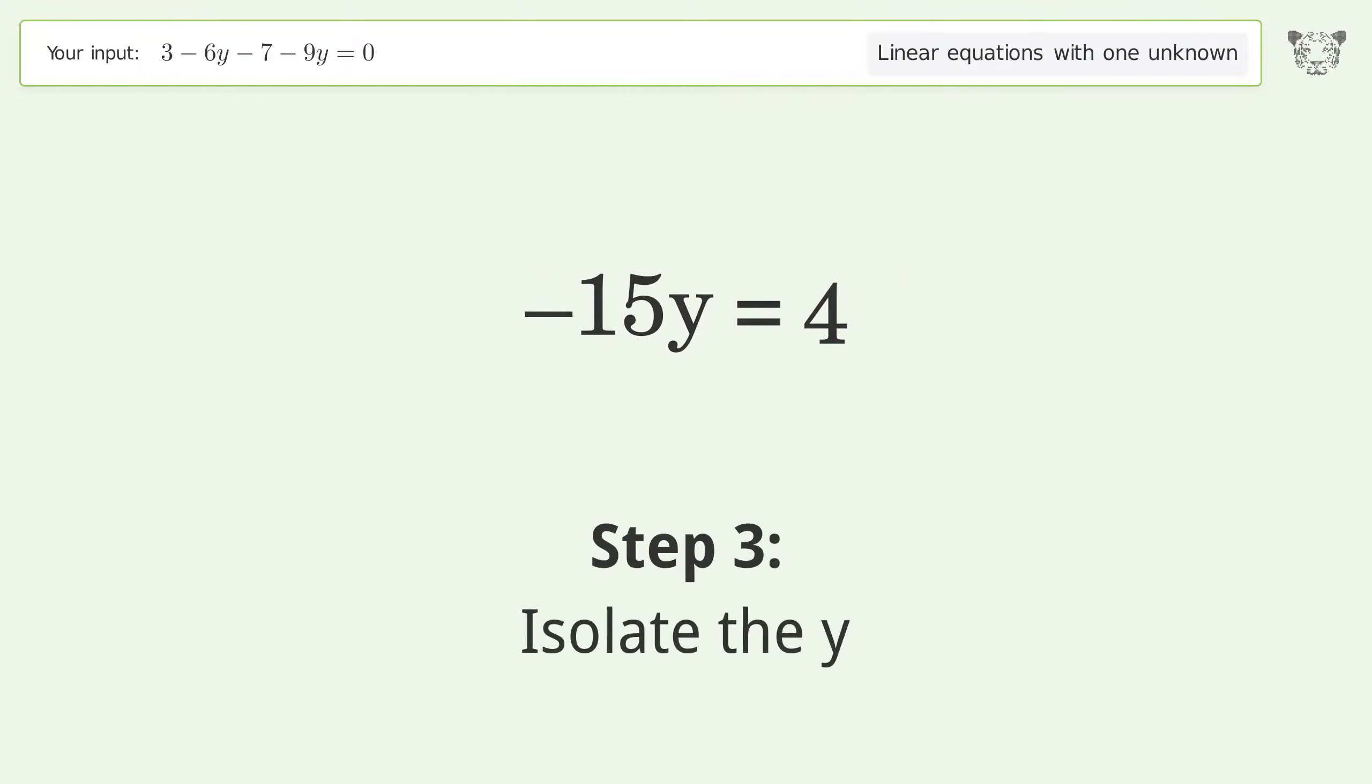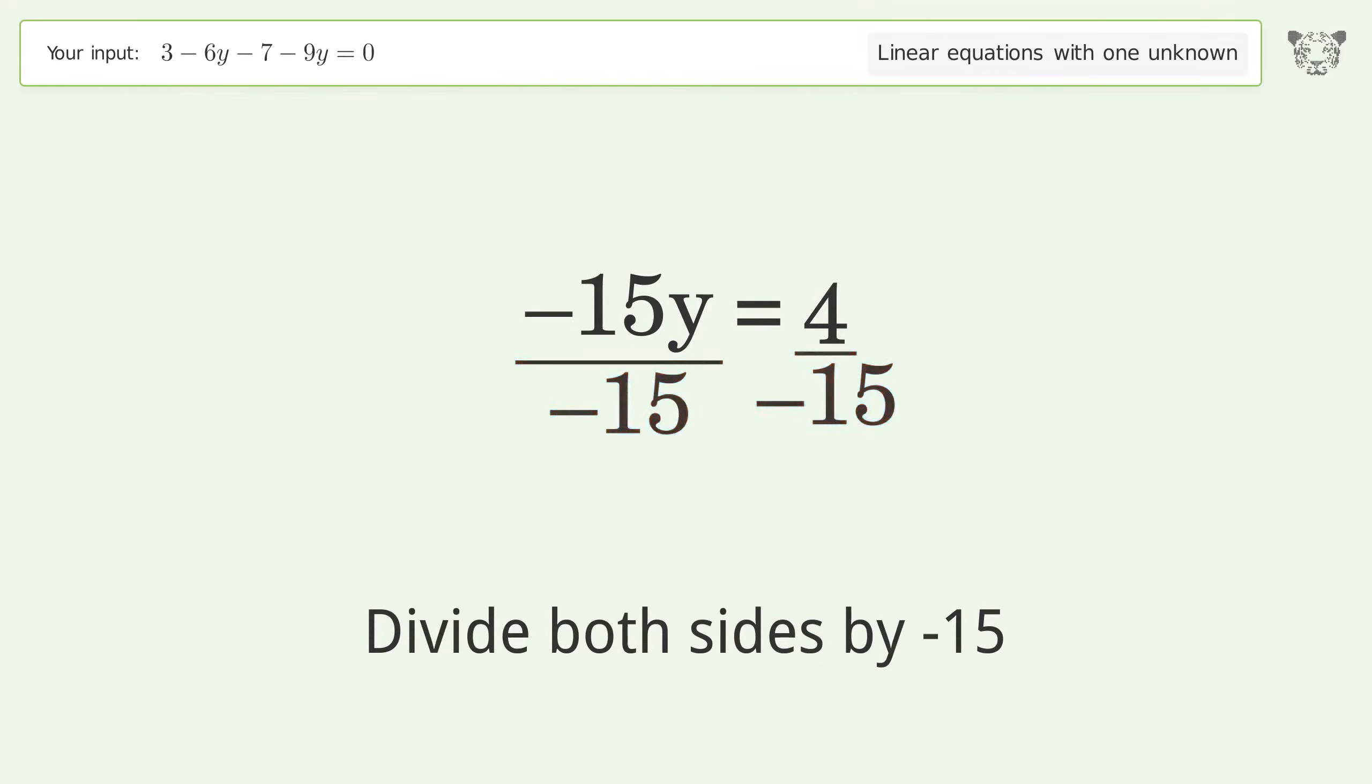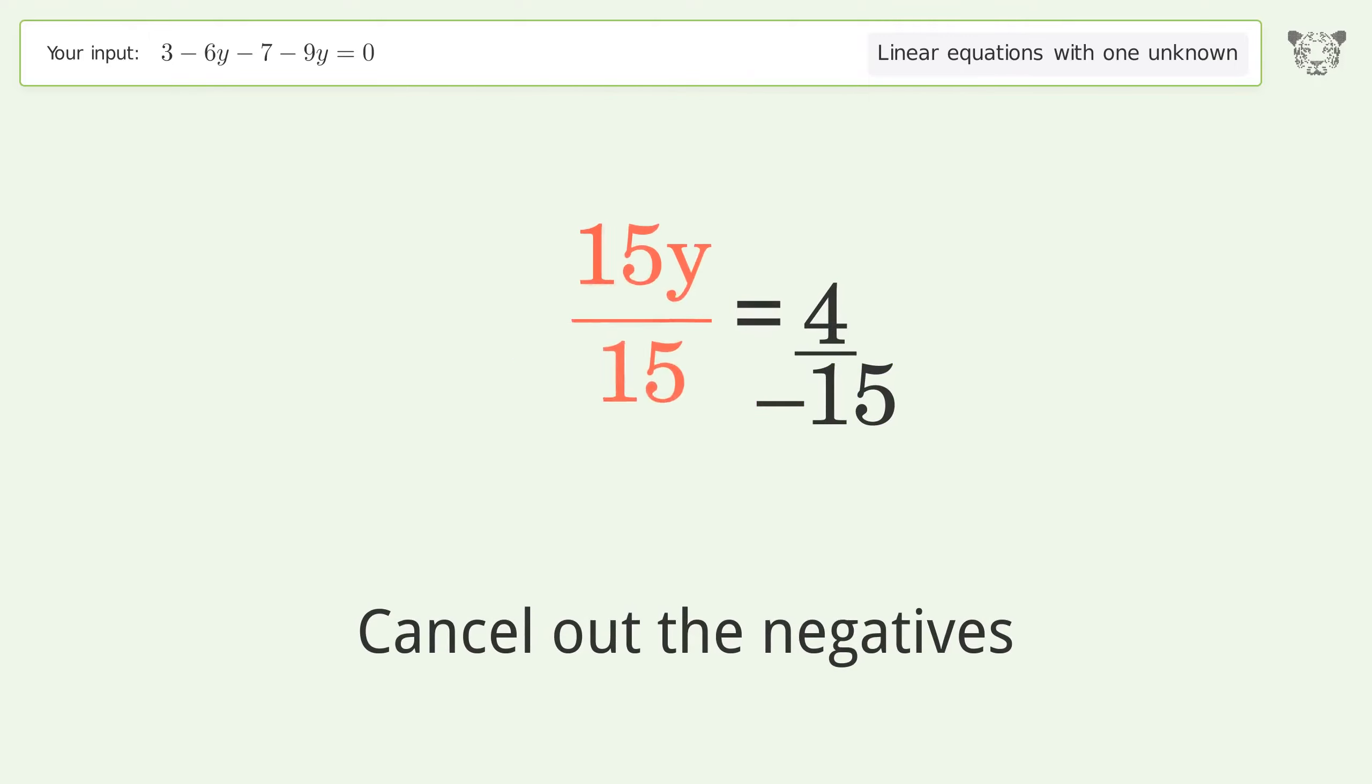To isolate the y, divide both sides by negative 15. Cancel out the negatives, then simplify the fraction.